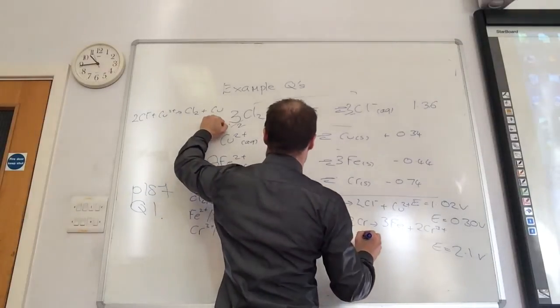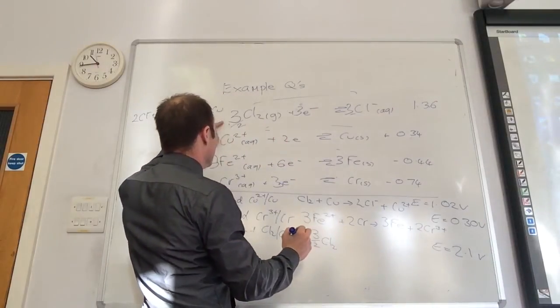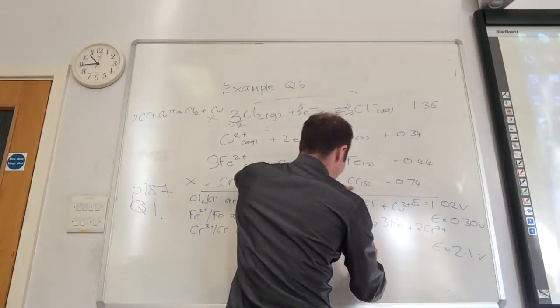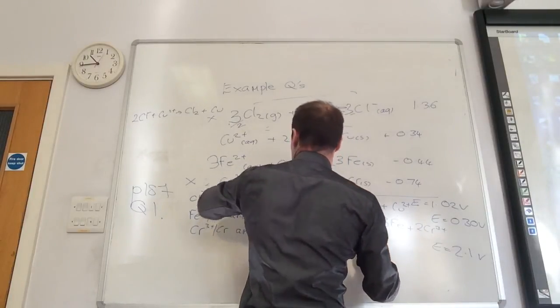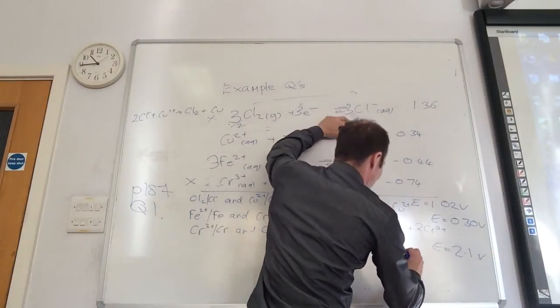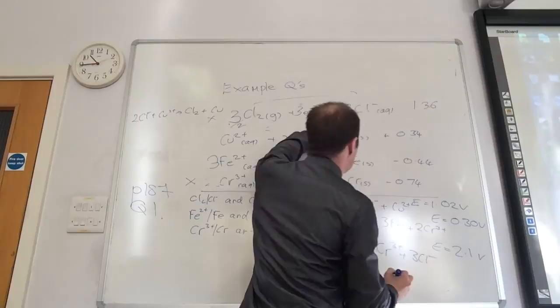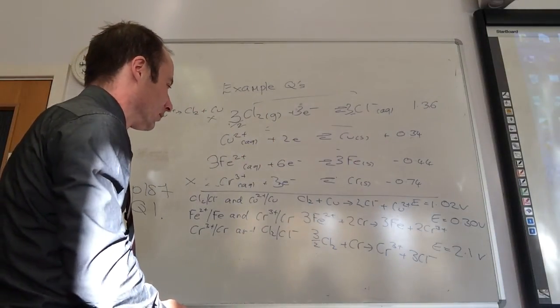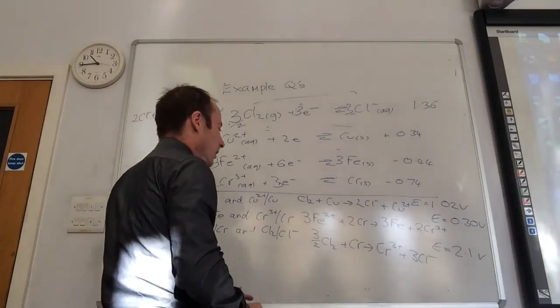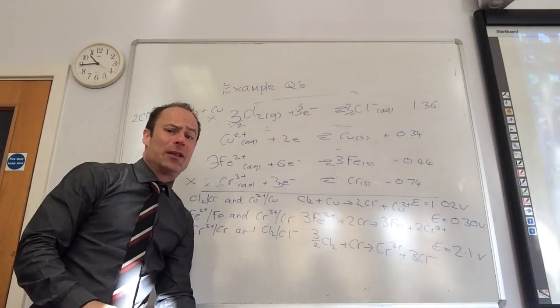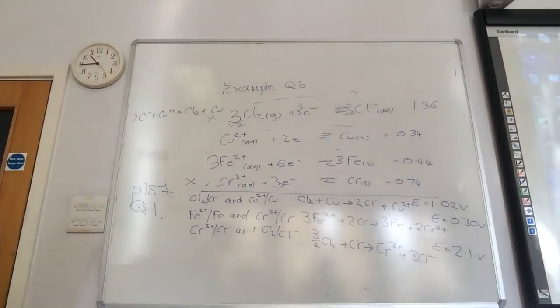So this one will be 1.5 Cl2, 3 over 2, plus chromium goes to chromium 3 plus plus 3 Cl minus. Yeah, we're happy with that. Okay, cool. That's pretty much all there is to it in terms of this.